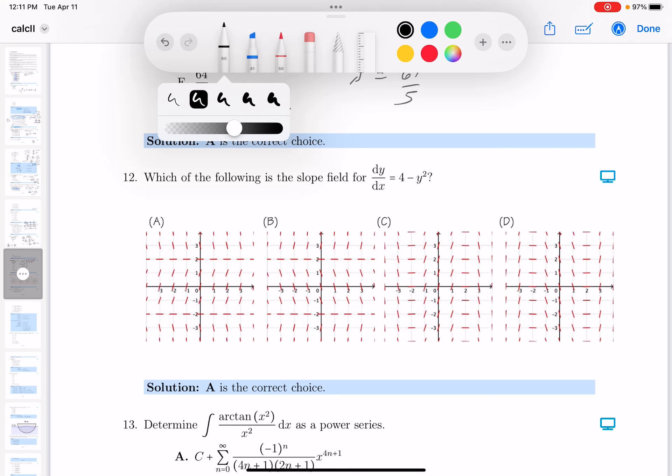Okay, for number 12, I'm looking at it, and it's a derivative problem, and what they do is they have the slope field draft for me.